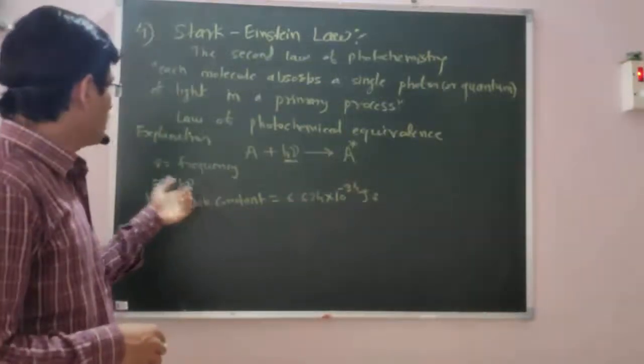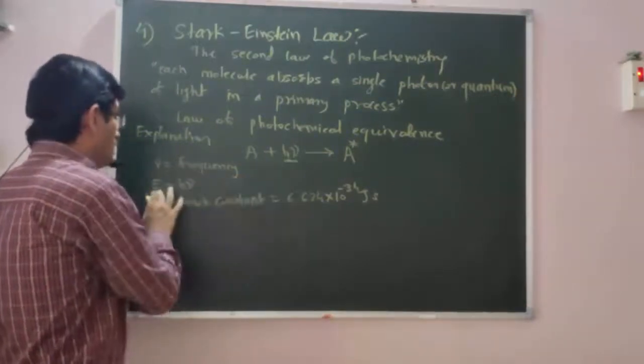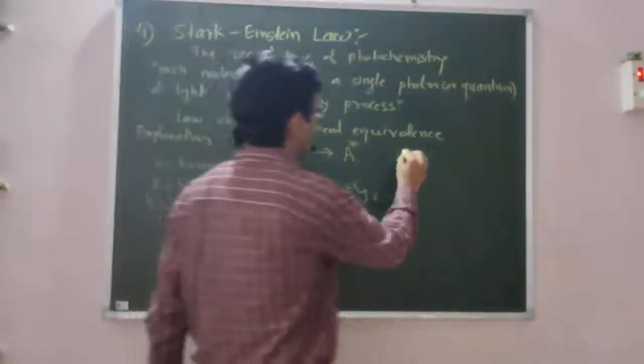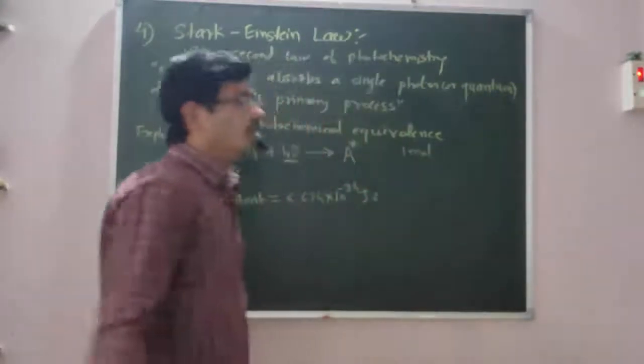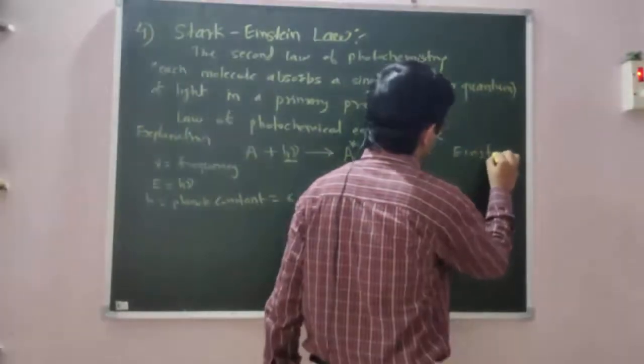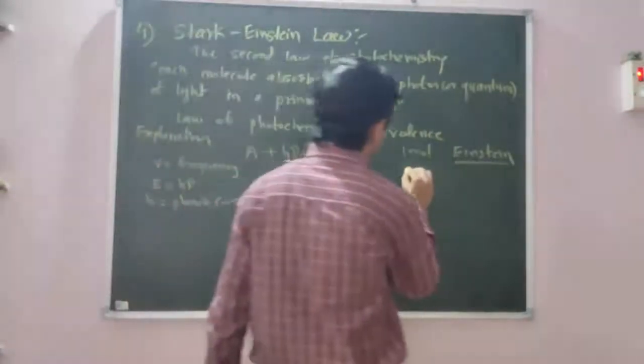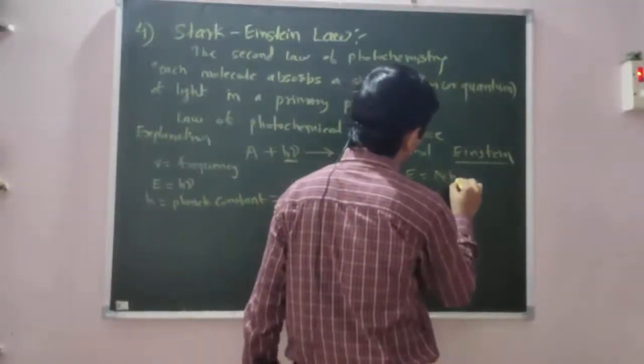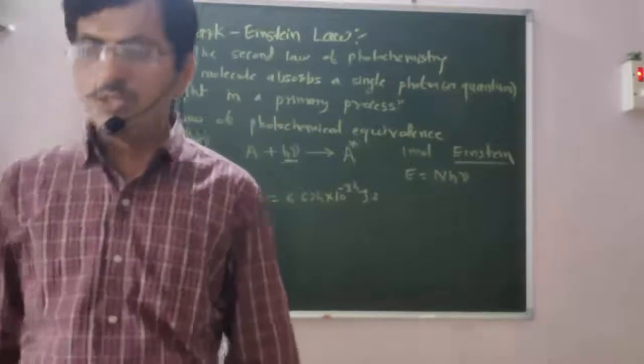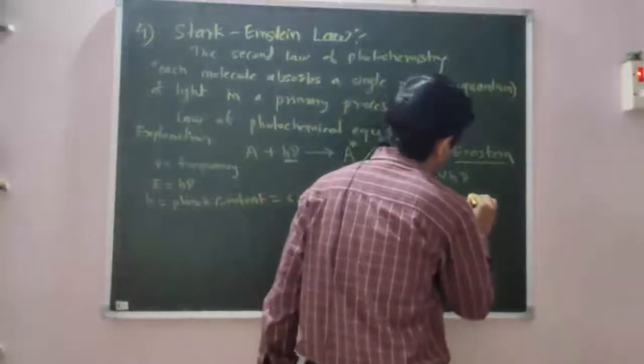This photon energy, E is equal to hν. The energy of photon is called as Einstein and is given as E is equal to N into h into ν, where this N represents Avogadro's number.